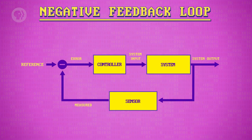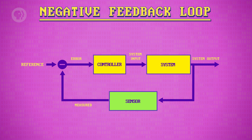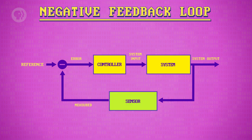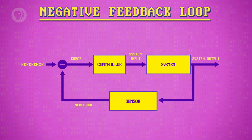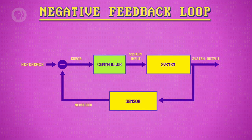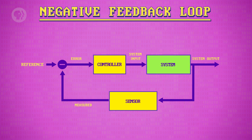A negative feedback control loop has three key pieces. There's a sensor that measures things in the real world, like water pressure, motor position, air temperature, or whatever you're trying to control. From this measurement, we calculate how far we are from where we want to be – the error. The error is then interpreted by a controller, which decides how to instruct the system to minimize that error. Then the system acts on the world through pumps, motors, heating elements, and other physical actuators.